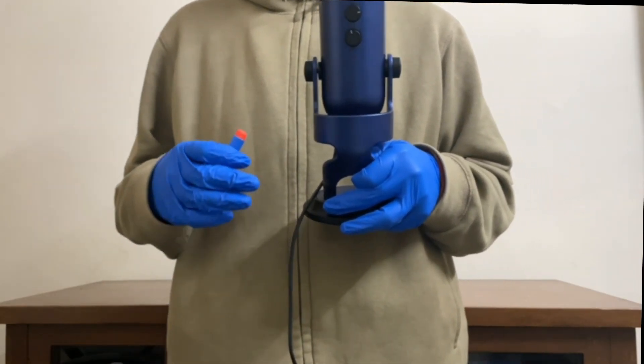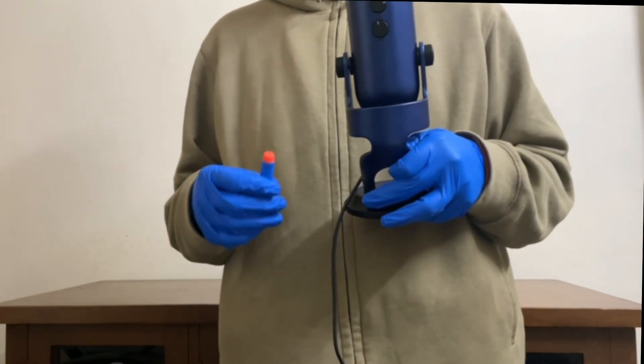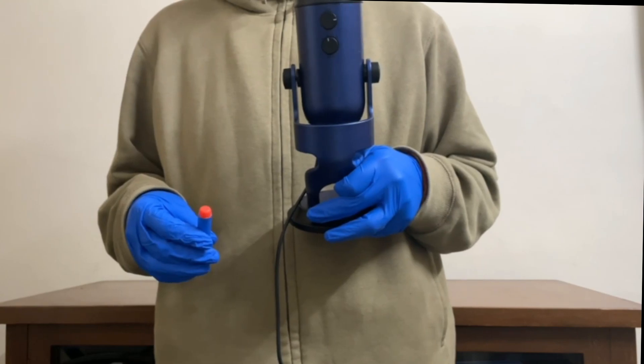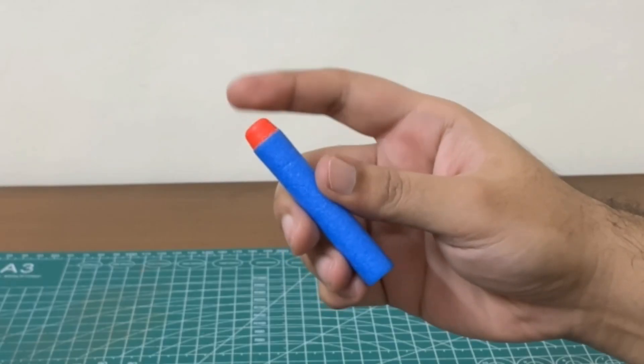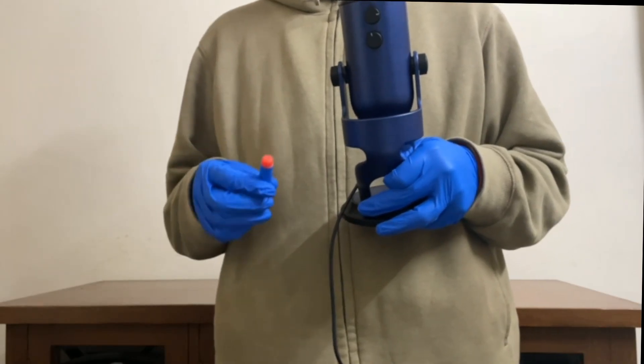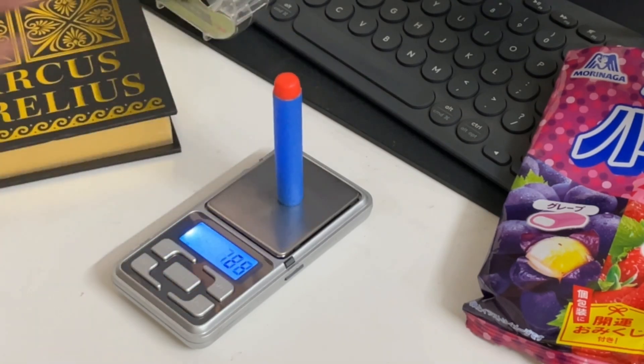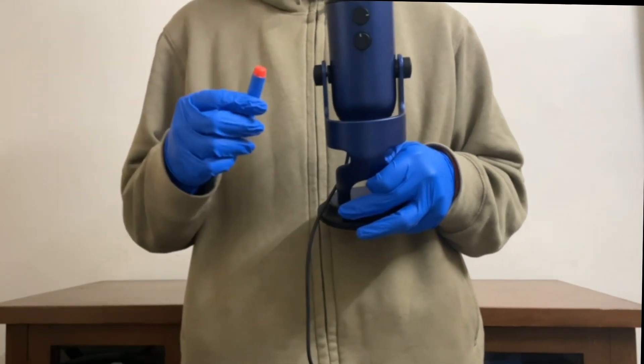Alright, so I'm gonna start with the two most basic requirements for this. First, I need the main bit of the dart to be the same size as the Nerf nipple, is that what it's called? And the second requirement is I need to make sure that the dart isn't too heavy so it doesn't do this.